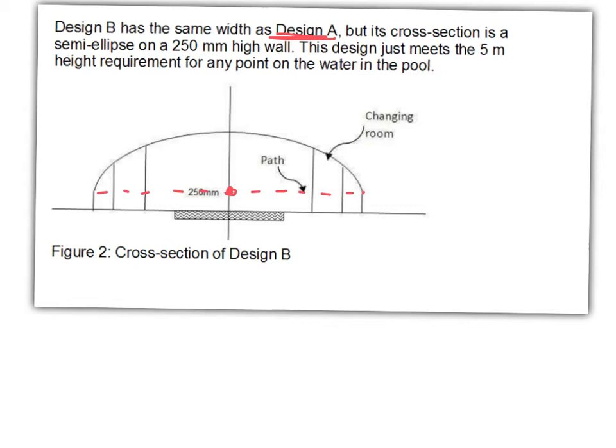And this design just meets the 5 metre height requirement for any point on the water in the pool. So that's telling me that at this point here, the height of the ellipse will be 5. So we're going to use that. Let's get going.